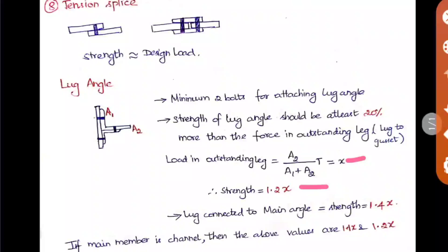When the lug is connected to the main angle, the strength should be at least 40% more — so that is 1.4x. They may ask in percentage or in decimal form, so be clear with both. It is 20% when connected to the gusset plate and 40% when connected with the main angle.